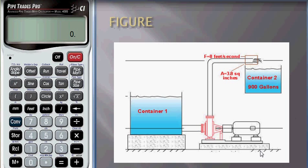This is the figure of the equation. There are two containers, container 1 and container 2. Container 1 is already filled. Now we need to fill container 2 which has a capacity of 900 gallons.